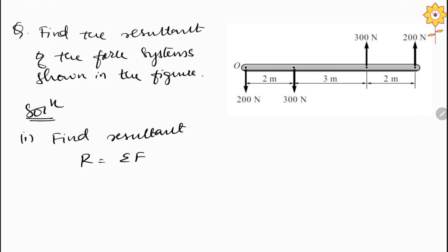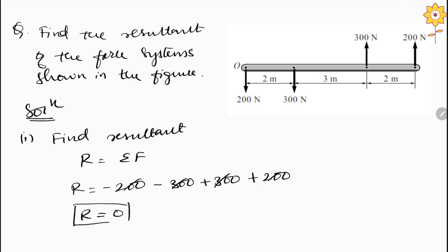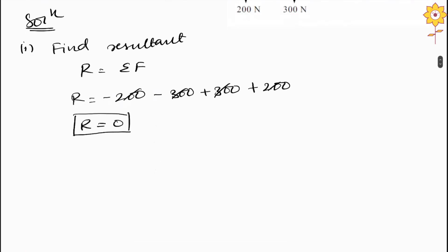R is equal to the summation of all forces: 200 downward is negative, 300 downward is negative, 300 upward is positive, and 200 upward is positive. Every force cancels out — minus 200 plus 200, minus 300 plus 300 — giving a resultant of 0. Since R equals 0, the resultant may be a couple.